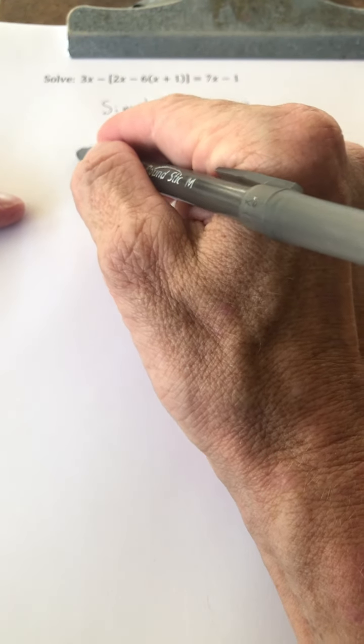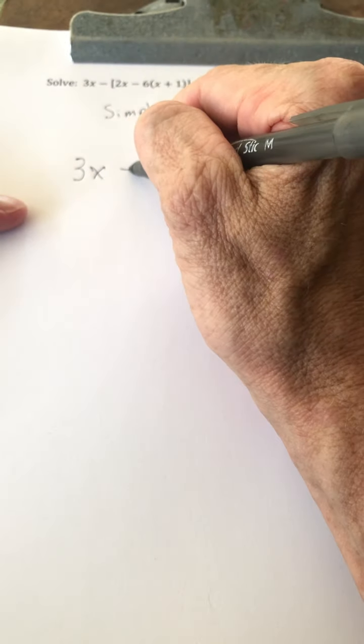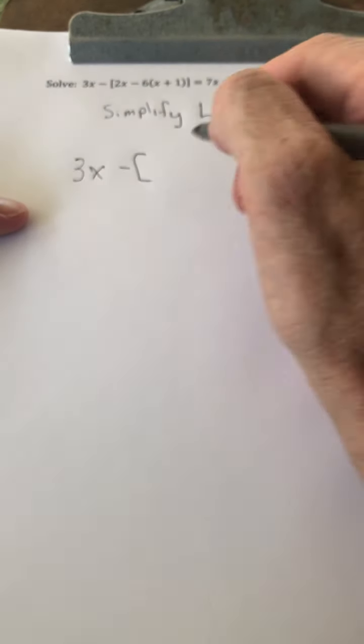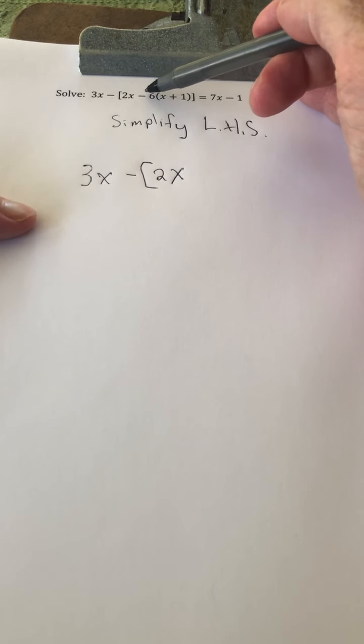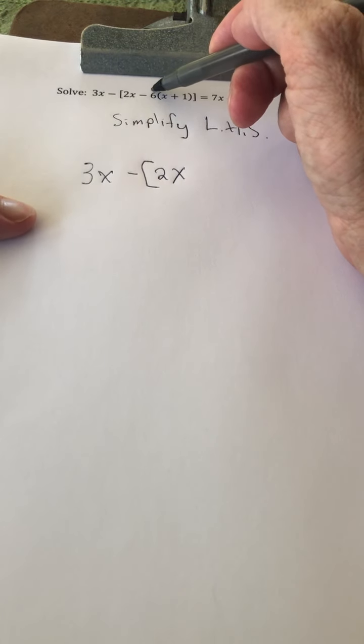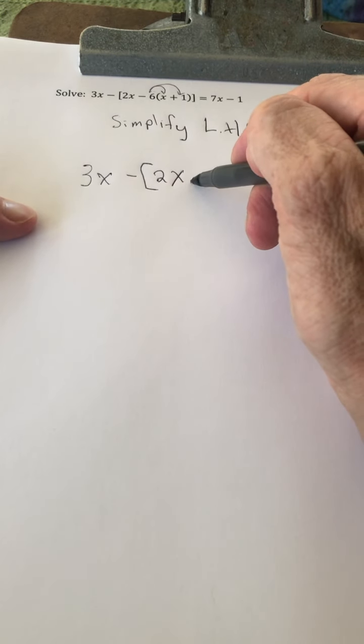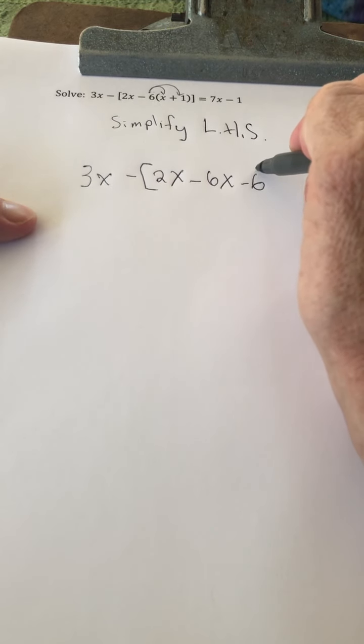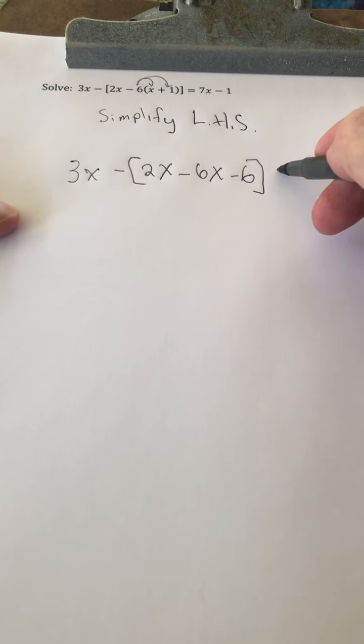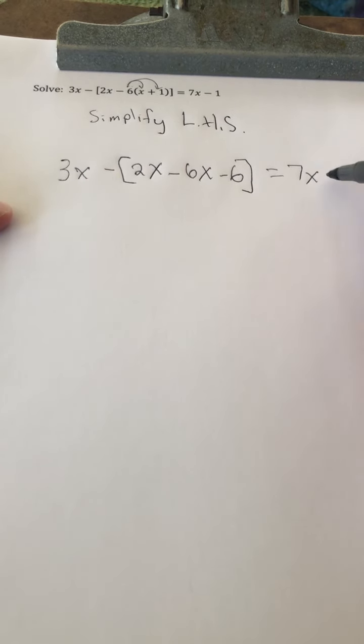So we have 3x minus the quantity 2x. I have to now distribute this negative 6, so that's going to give us minus 6x minus 6, equals 7x minus 1.